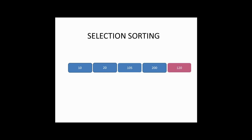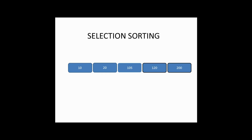Now we have 200 and 120 left. Between the two, 120 is the smallest element. Our pointer position is on 200, so 120 and 200 will be swapped with each other. As you can see from the diagram, 120 and 200 are swapped. Hence this is the resultant ordered list.